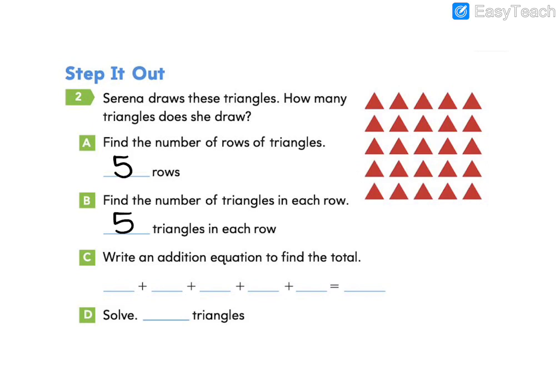Complete the addition equation to find the total. Our equal addend is 5 and we have 5 groups of 5. I can skip count to find how many total triangles. 5, 10, 15, 20, 25 total triangles. So go ahead and answer letter D, how many triangles are there? 25.